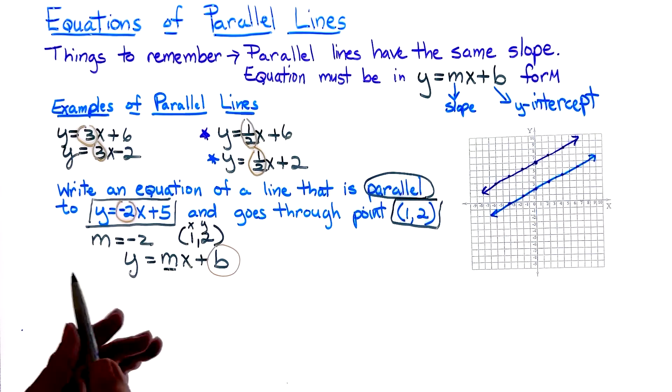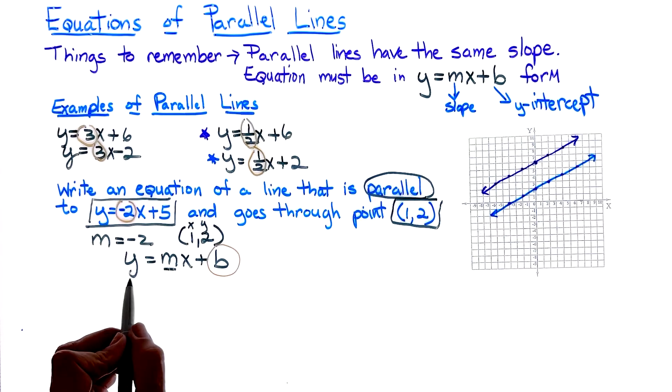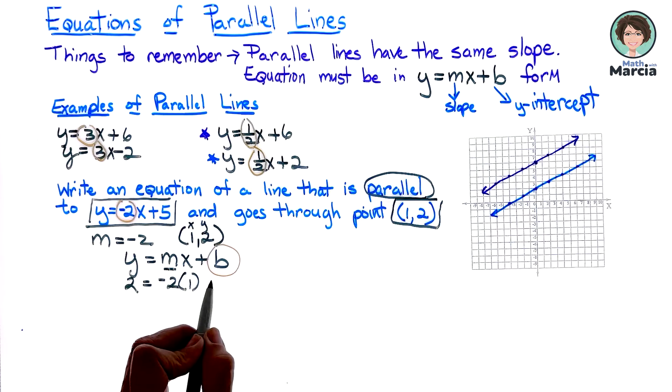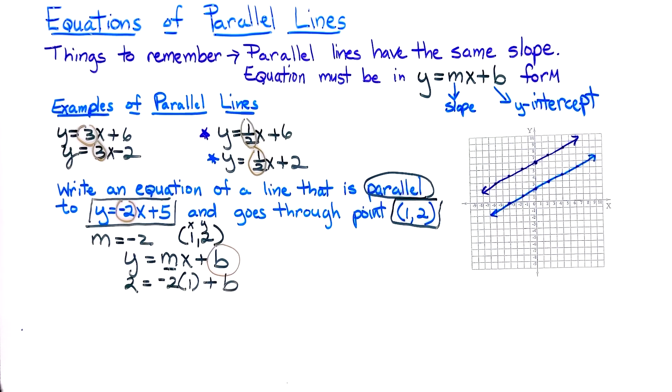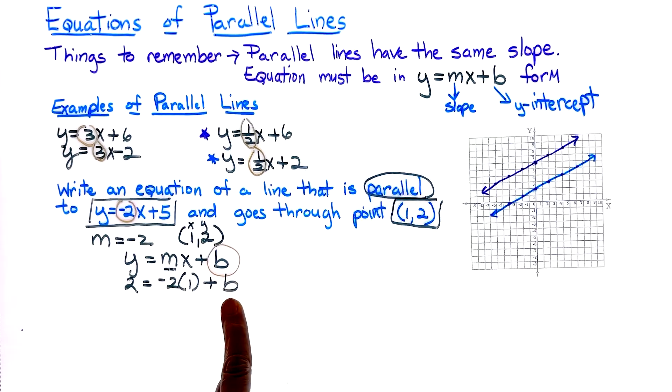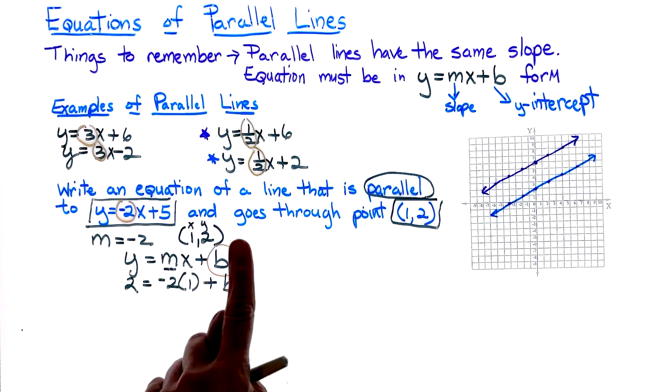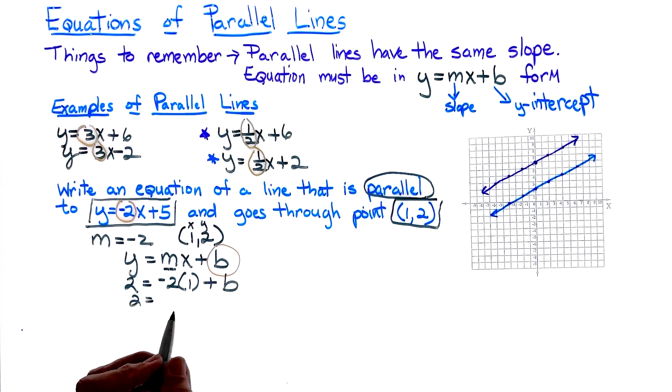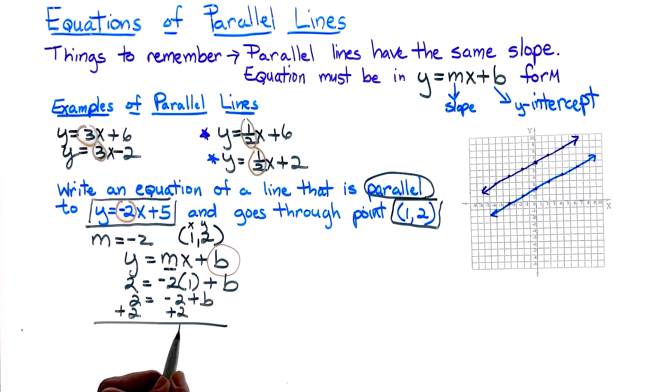Notice I labeled my ordered pair so I don't make a mistake. My 2 is my y, my slope is a negative 2, x is 1, and now I don't know my letter b. So 2 is equal to a negative 2 plus b. We know we must get the variable alone, so I'm going to add 2 to both sides. So b is equal to 4.